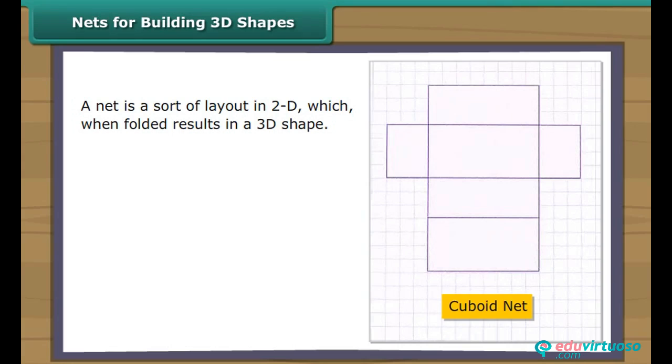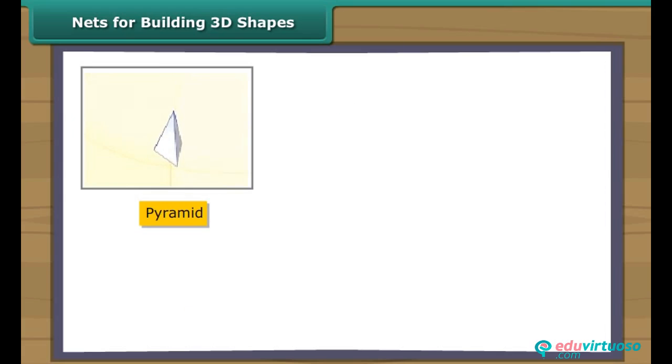Here we show you how a cuboid is formed from its net. Now you can see a cube with its net. Now we see how a pyramid is formed. Here we show you how a pyramid is formed from its net.